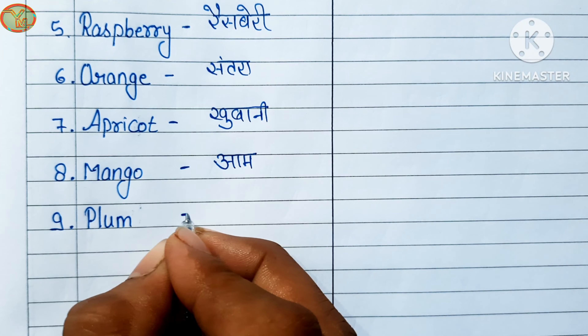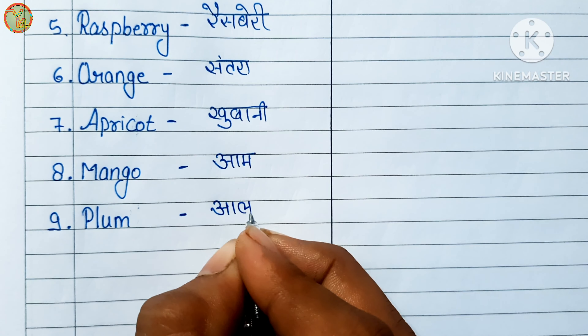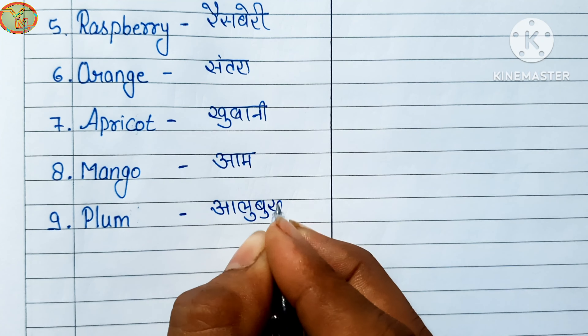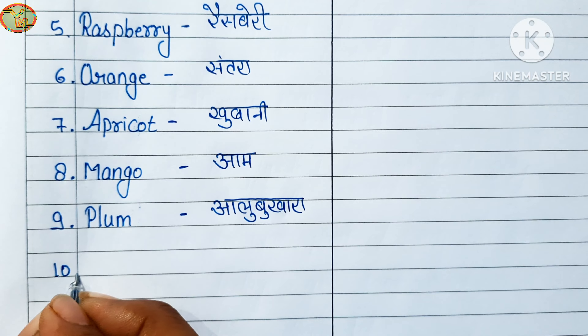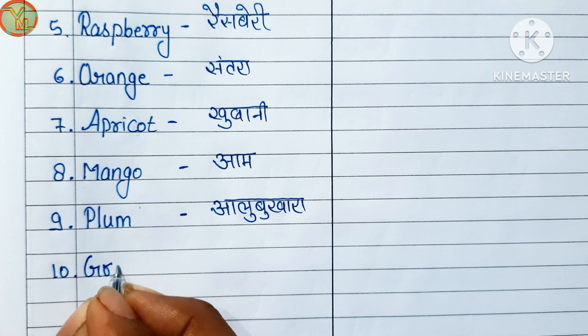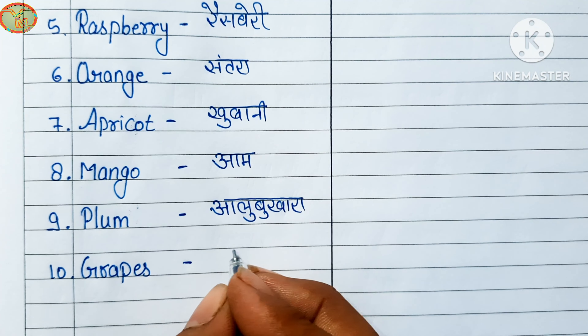Ninth number: plum. Plum means aloo bukhara. Tenth number: grapes. Grapes means angur.